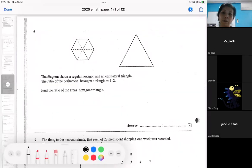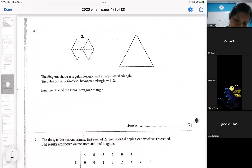Okay, so we are only given ratio here, ratio of the perimeter. So to make life easier, I'm going to do the perimeter like this. This is a regular hexagon, so I'm going to do it this way. So from here, the perimeter is supposed to be 6x.